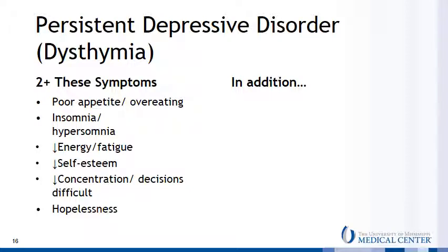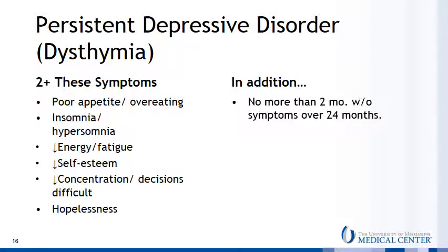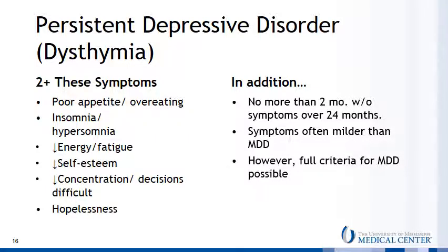Finally, there is another depressive disorder without a clear trigger called persistent depressive disorder in the DSM-5, although it is frequently known by its older name of dysthymia. The range of symptoms includes six of the seven non-pathognomic symptoms of major depressive disorder. What is clearly pathognomic of persistent depressive disorder is its duration — symptoms must be present for at least two years, with no more than two months during that time without symptoms. Although the symptoms are often milder than MDD, patients with dysthymia can present full criteria at times for a major depressive episode. This comorbidity is sometimes referred to as double depression. Persistent depressive disorder cannot include mania, hypomania, or cyclothymia.